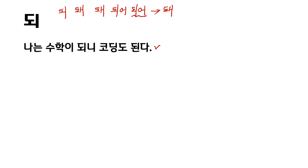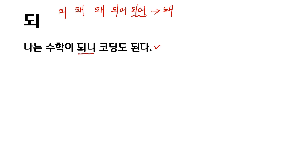나는 수학이 대니. This 대니 cannot be said as 되어니, so this should always be 되니. 코딩도 된다. This 된다 means 'no' — I know mathematics and I also know computer coding.